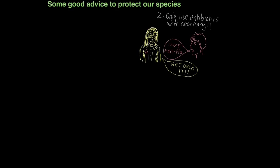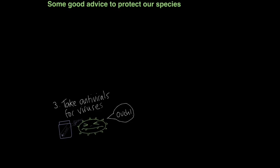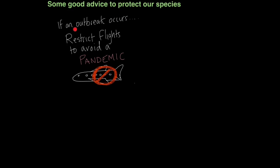Secondly, only use antibiotics when necessary. For viruses, you can take antivirals rather than antibiotics. Obviously rest, sleep, and eating healthily will also help your immune system fight viruses. Also, if the worst happens and an outbreak occurs, countries can always restrict outgoing and incoming flights to avoid a pandemic — that's when an outbreak goes worldwide, and that's the worst possible thing that can happen in terms of disease.